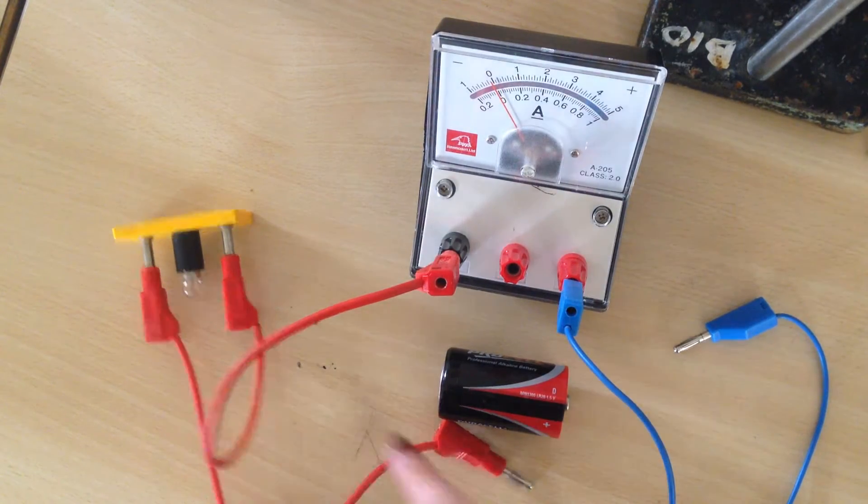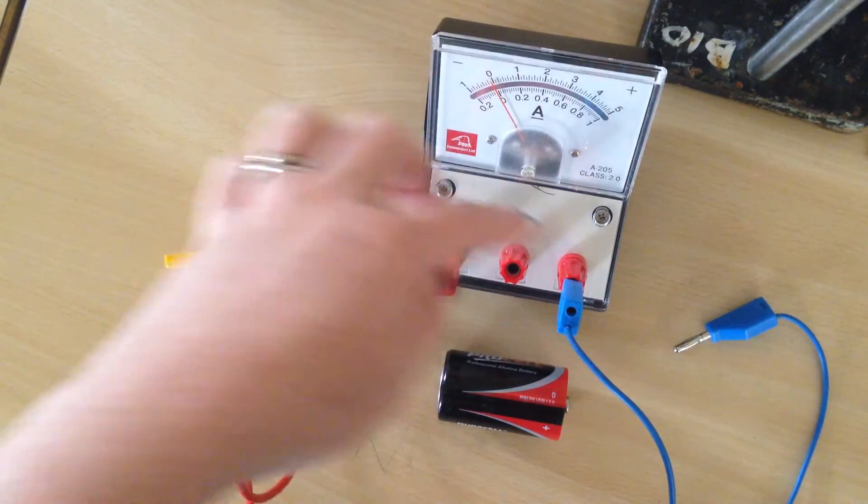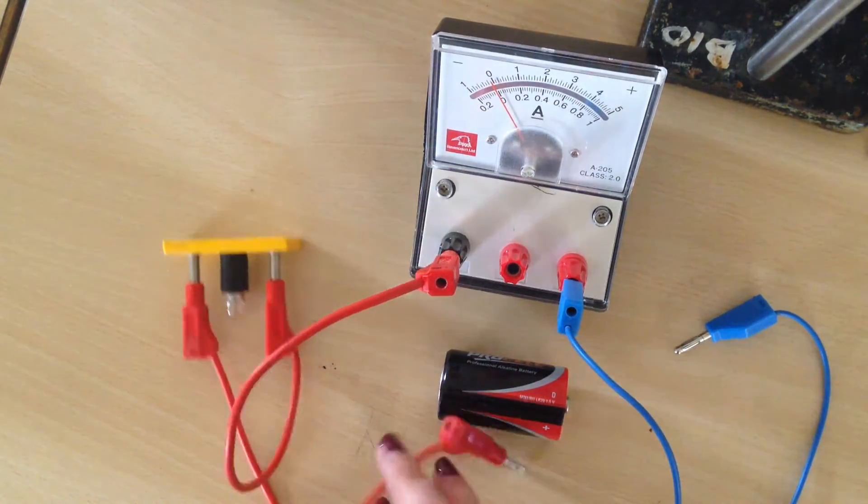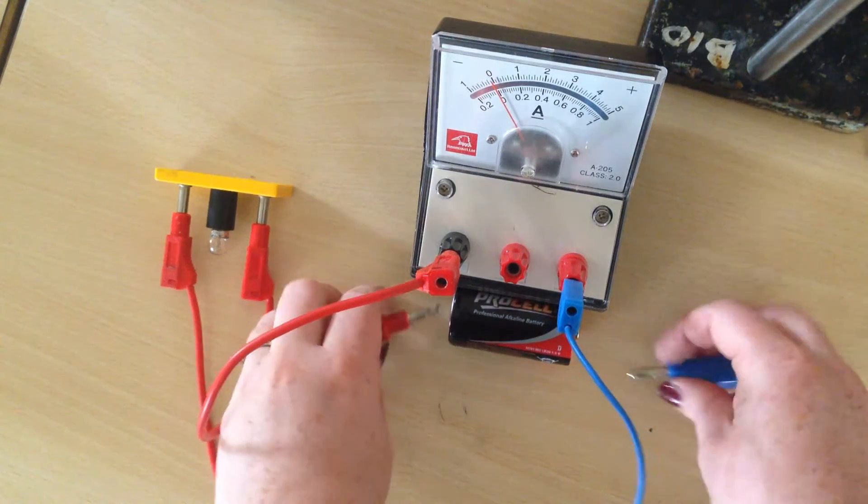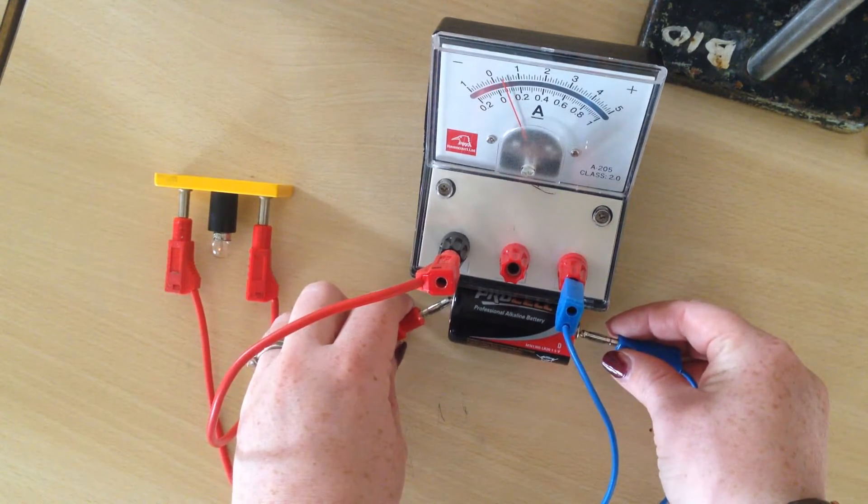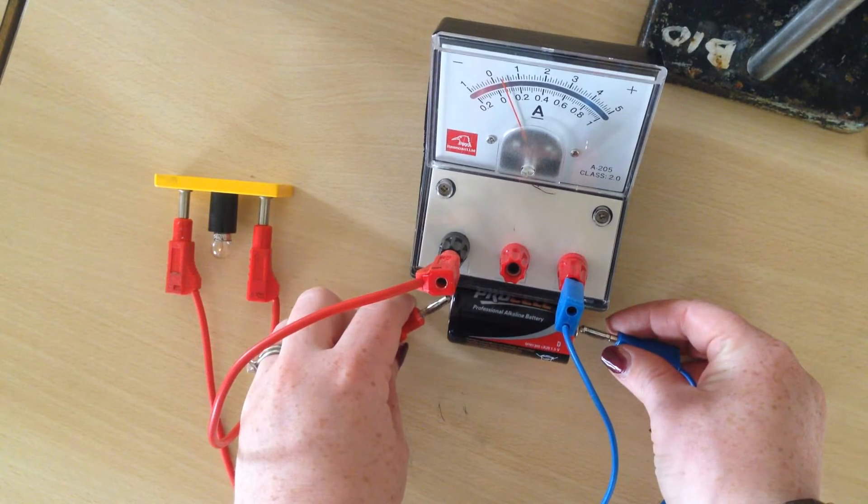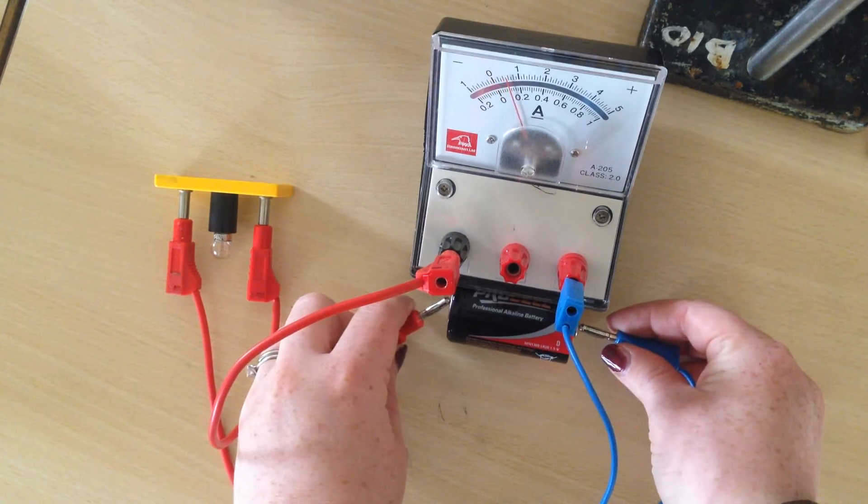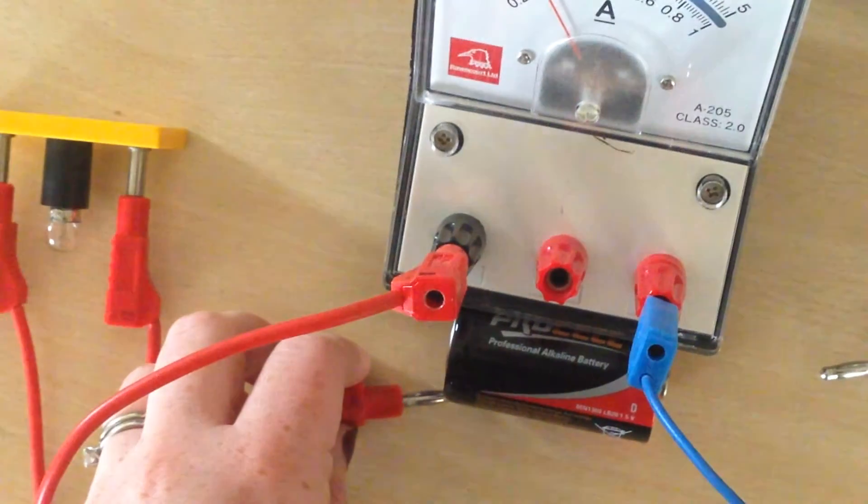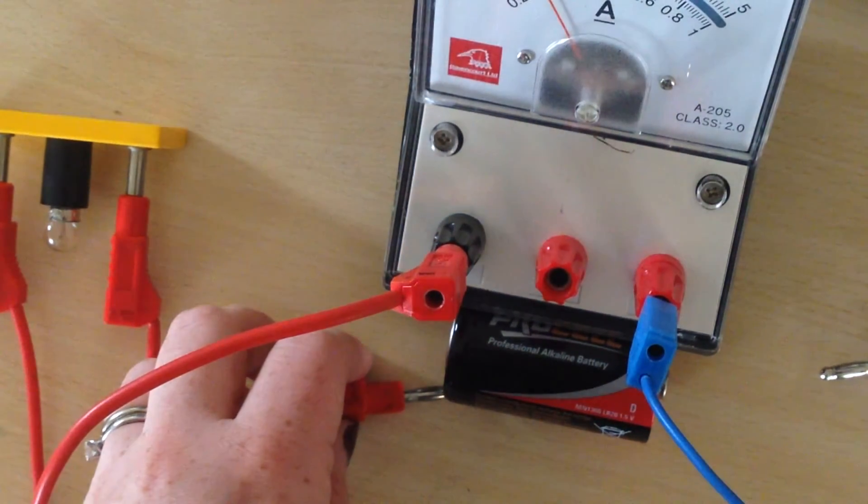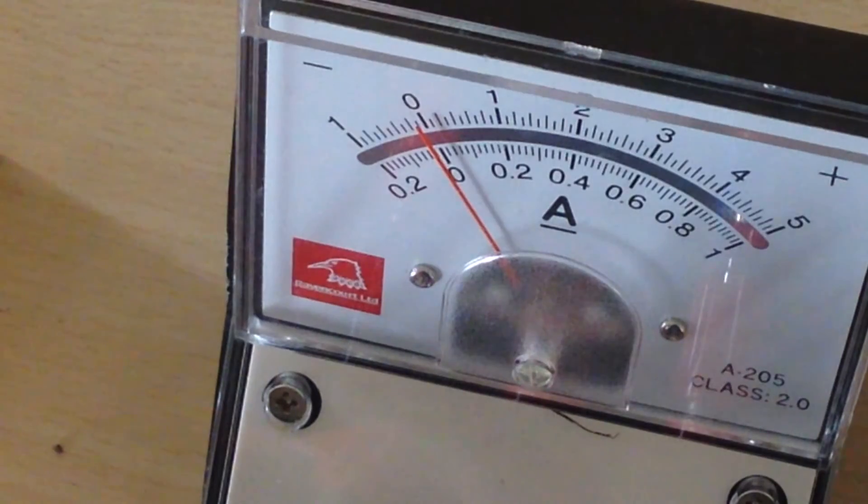So here I have an ammeter connected up in series. You can see again I can follow the whole path through with one single line. Ammeters have to be connected in series and then when I connect up the battery, I'll just show you that to you again, hopefully you can see the ammeter moving. I'll just zoom in on that for you a touch. So it's zoomed in, I'm just going to connect the battery and you can see the ammeter jump there a little bit and that is measuring the amount of current flowing through the circuit.